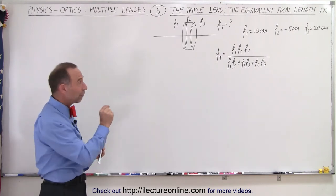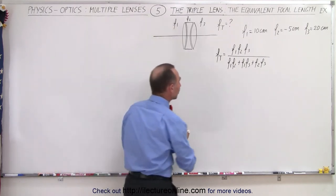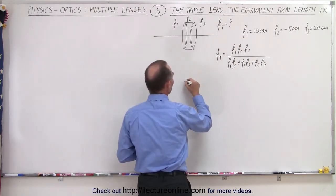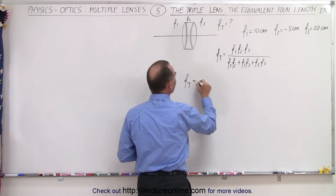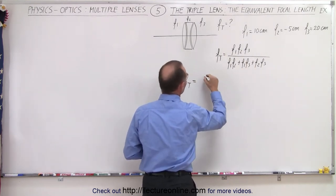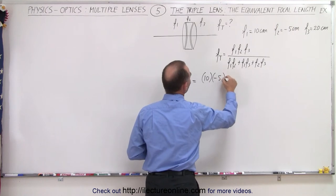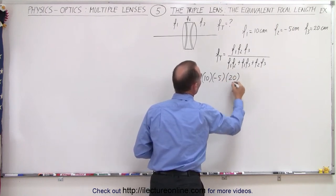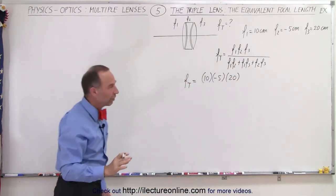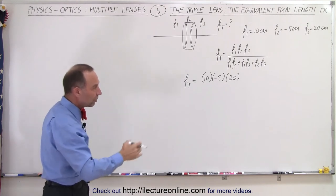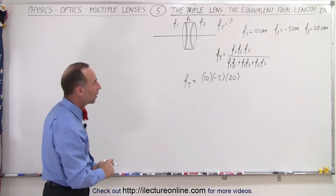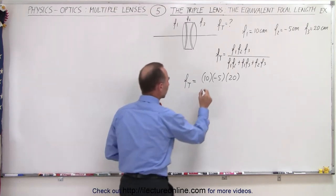That means that the signs are very important when we utilize this equation. So here we have the total focal length is equal to the product of the three: 10 times minus 5 times 20. Now it helps to leave the units off as long as you remember that you use all in centimeters or meters, whatever the units are, so that it looks a lot cleaner to work this out.